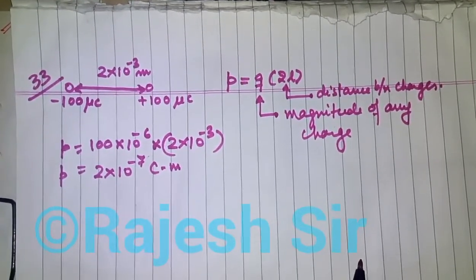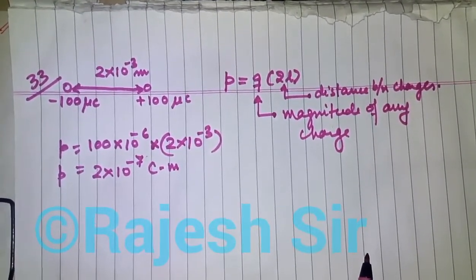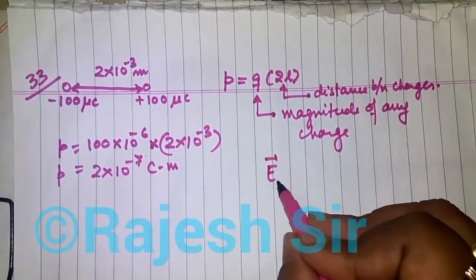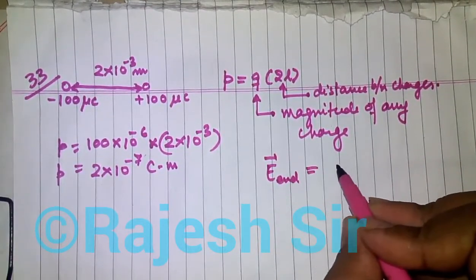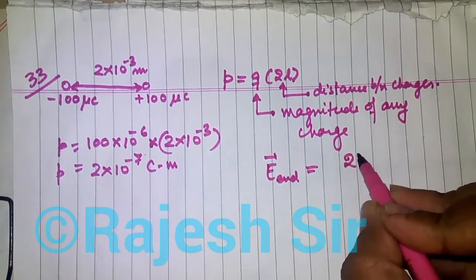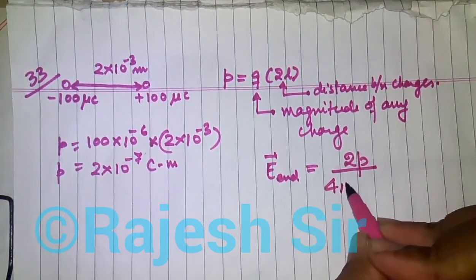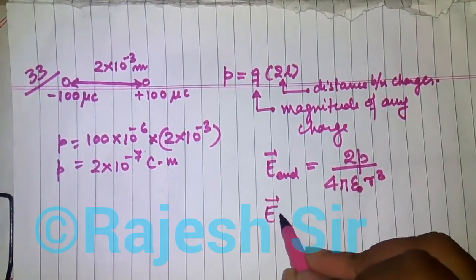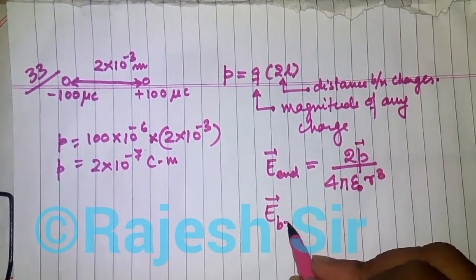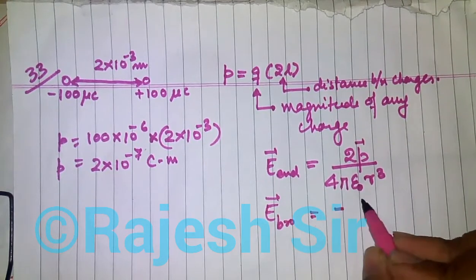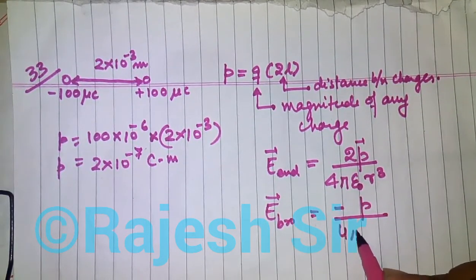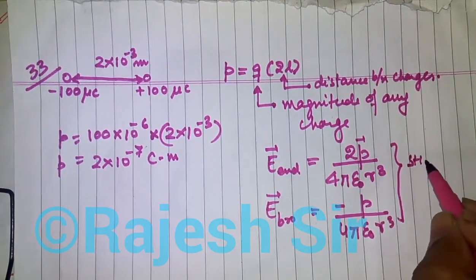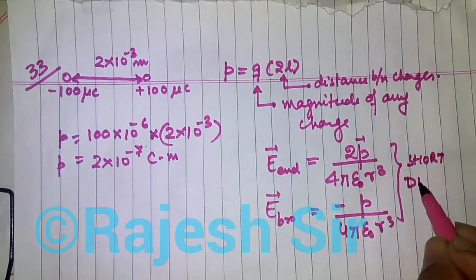The second part of the question asks us to find the electric field at axial and equatorial positions. The electric field at the end-on position is 2p / (4πε₀r³), and at the broadside-on position it is p / (4πε₀r³). Both results are applicable only for a short dipole.